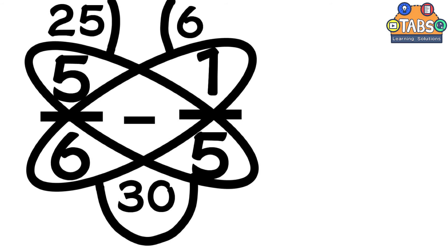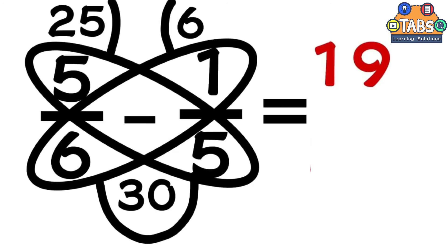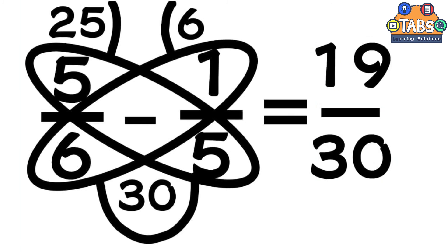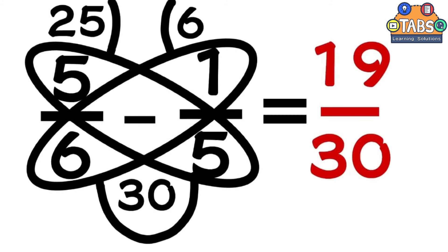Now, in subtraction, instead of adding the two antenna numbers, we subtract them: 25 minus 6 equals 19, so 19 will be the numerator. The fraction will be 19 over 30. Remember to simplify the fraction if possible. Since 19 over 30 is already in its simplest form, the answer is 19 over 30.